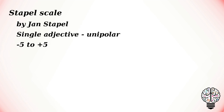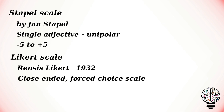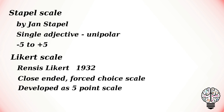The higher the positive score selected by the respondent, the more accurate the adjective describes the object, and vice versa. The Likert scale was developed by Rensis Likert in 1932. It is a close-ended forced choice scale used in a questionnaire that provides a series of answers that go from one extreme to another. It is usually a 5-point scale ranging from strongly disagree to neutral to strongly agree. A 6-point Likert scale has 3 levels of disagreement and 3 levels of agreement.